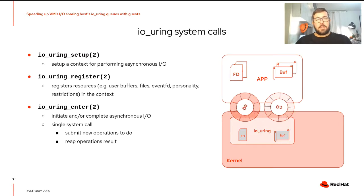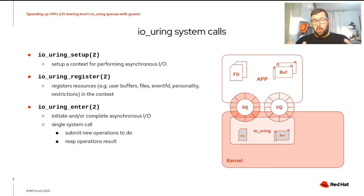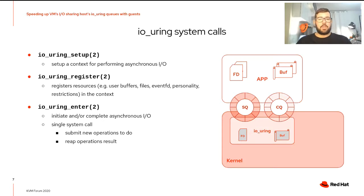The last system call is IOUring enter. It's the most used system call during the lifecycle of the context because it's used to initiate and/or complete asynchronous I/O. So with a single system call, we can submit new operations to do and reap operations done, using the rings that we are going to see in the next slides.